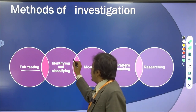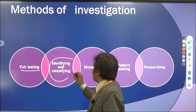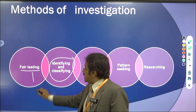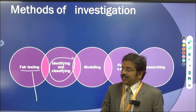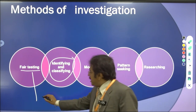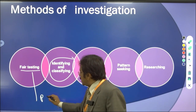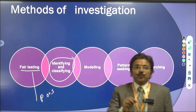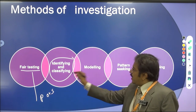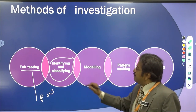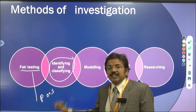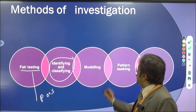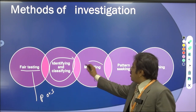The second method is identifying and classifying. Whenever you have got the data, you need to determine what type of data you have collected — whether it is primary data or secondary data. Whatever data you are getting, it must be identified and classified into sections.